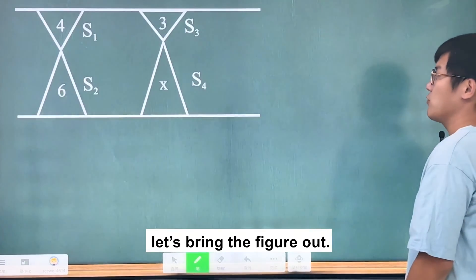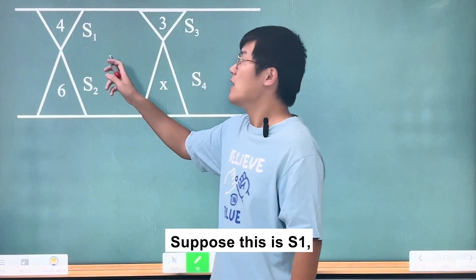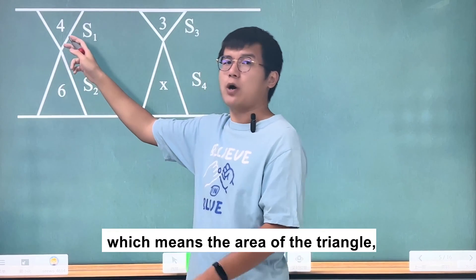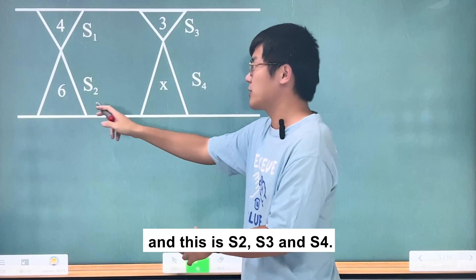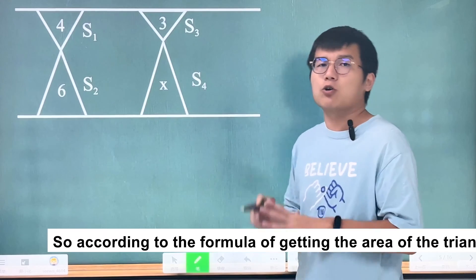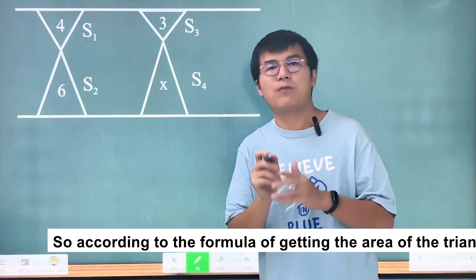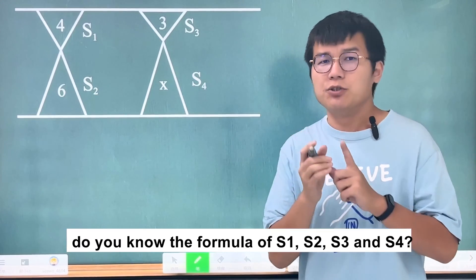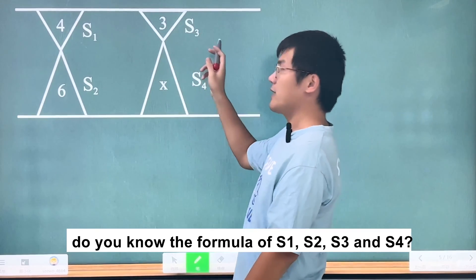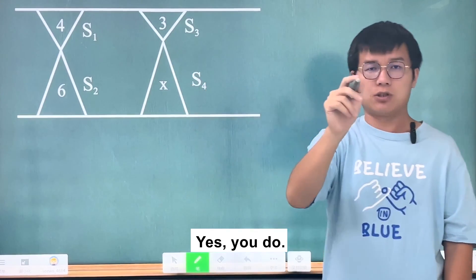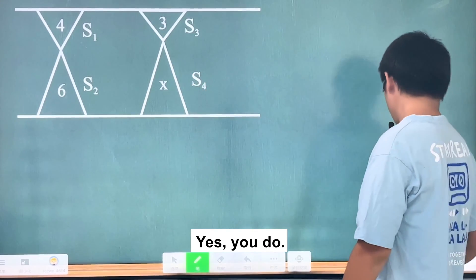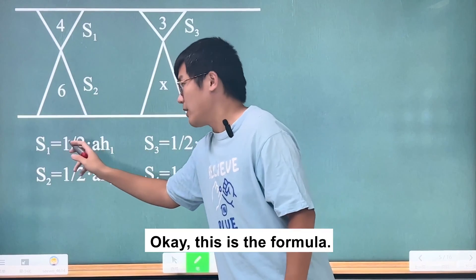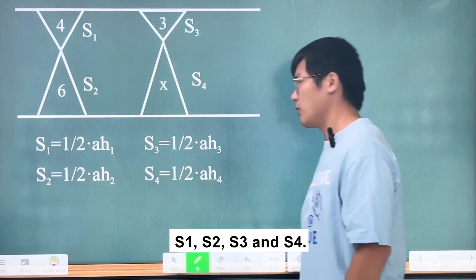Let's bring the figure out. Suppose this is s1, the area of the triangle, and this is s2, s3, and s4. According to the formula for the area of a triangle, can you write the formulas for s1, s2, s3, and s4? Yes, you can.